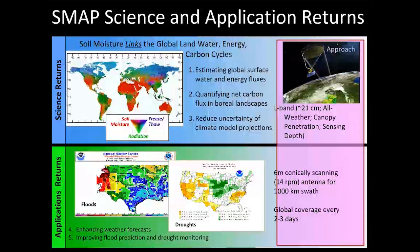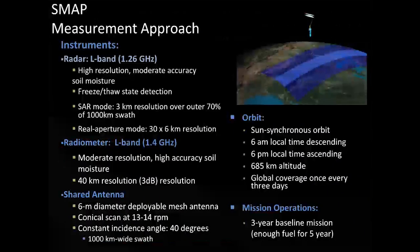SMAP uses L-band microwave frequency, which allows penetration through clouds and deeper into soil. SMOS had a penetration of about one to three centimeters using C-band; by using L-band, SMAP increased that penetration to about five centimeters. The applications return includes enhanced weather forecasts and improved flood prediction and drought monitoring. SMAP uses a conical scan with a large antenna, providing a 1,000-kilometer swath that allows global measurements in two to three days — a definite improvement.